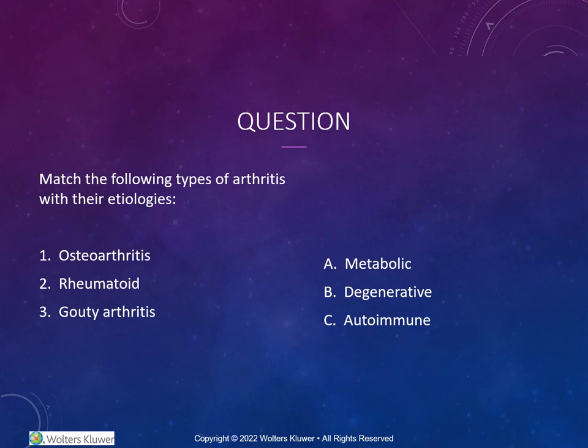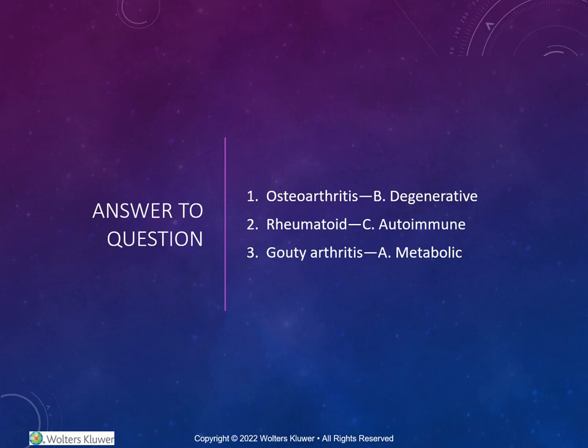Here's a question for you. Match the following types of arthritis with their etiologies: one, osteoarthritis; two, rheumatoid; three, gouty arthritis. The potential answers are A, metabolic; B, degenerative; or C, autoimmune. For the answer: number one, osteoarthritis is linked to a degenerative condition. Rheumatoid arthritis is an autoimmune condition, and gouty arthritis is a metabolic process or condition.